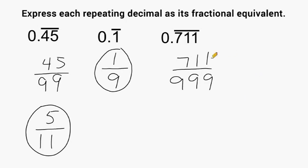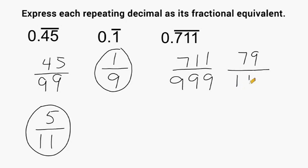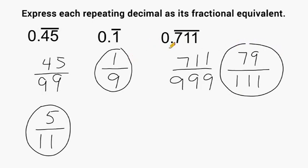Now the fraction 711 over 999 is also divisible by a factor of nine. If we divide this numerator by nine we get 79, and if we divide 999 by nine that gives us 111. So 79 over 111 is equivalent to zero point repeating seven one one.